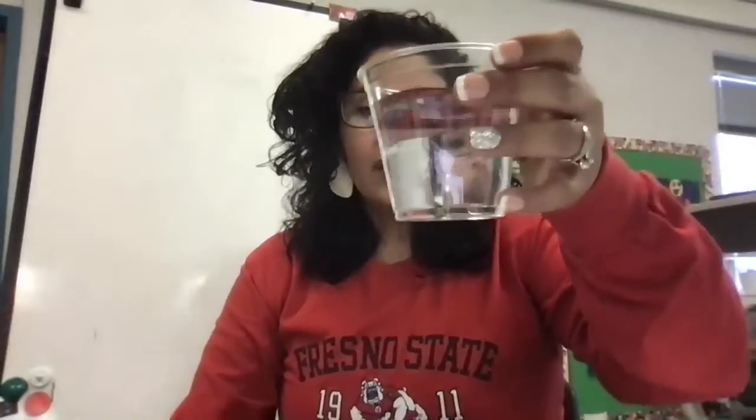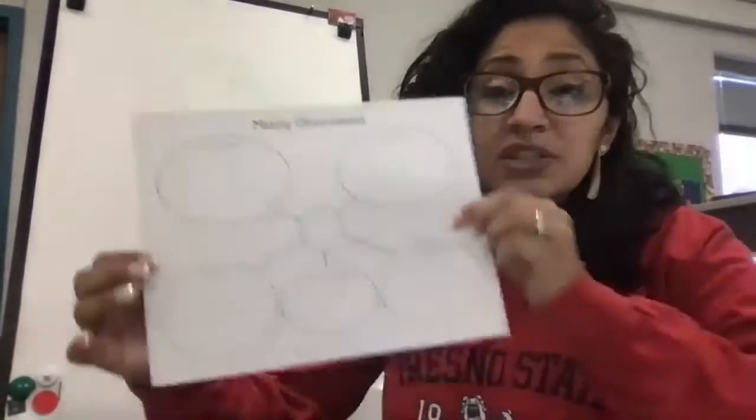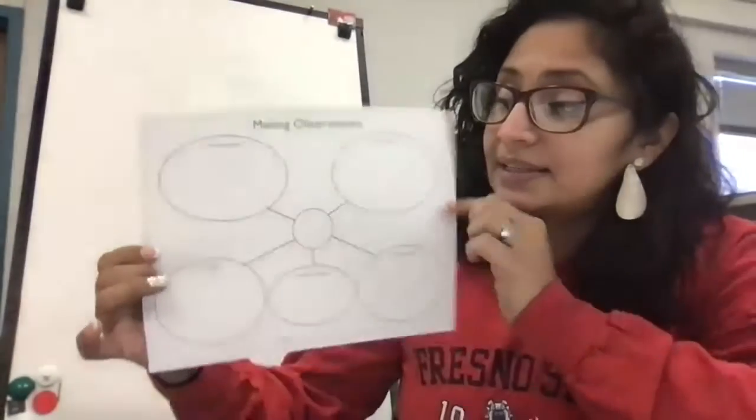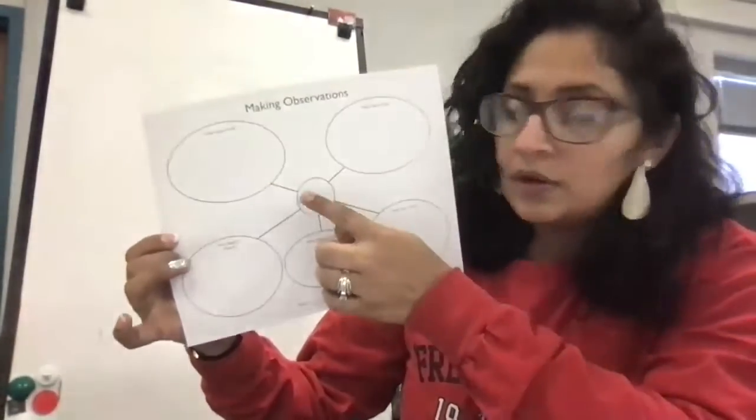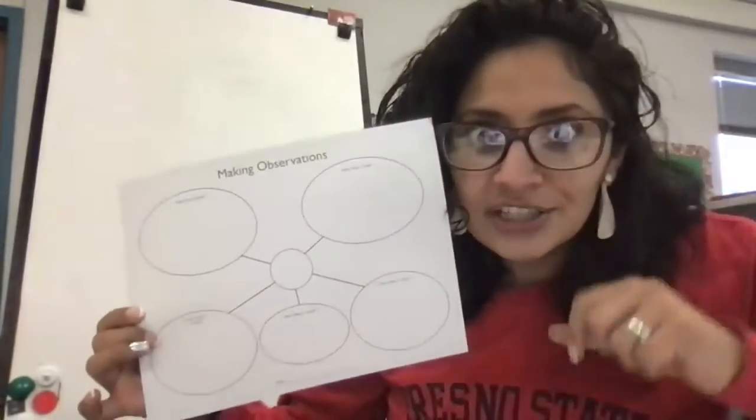So friends, today with our water, we're going to be looking at these five senses. We have a page in Schoology just for you. And it has a small circle in the middle and one, two, three, four, five bigger circles on the outside. One for each sense.